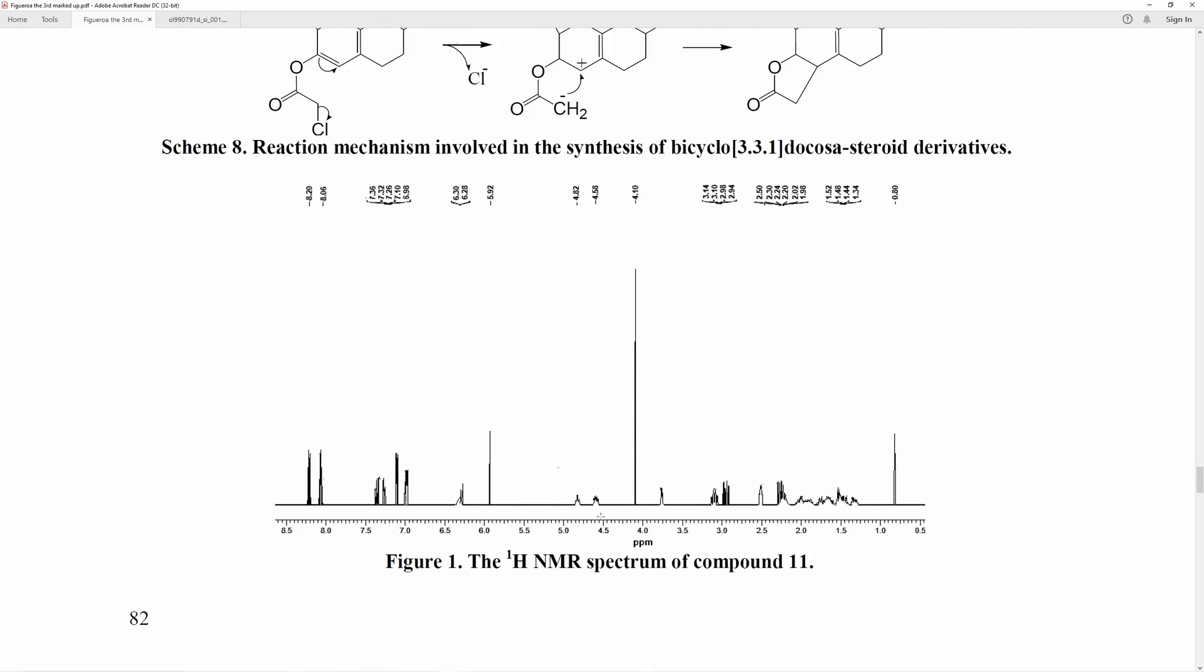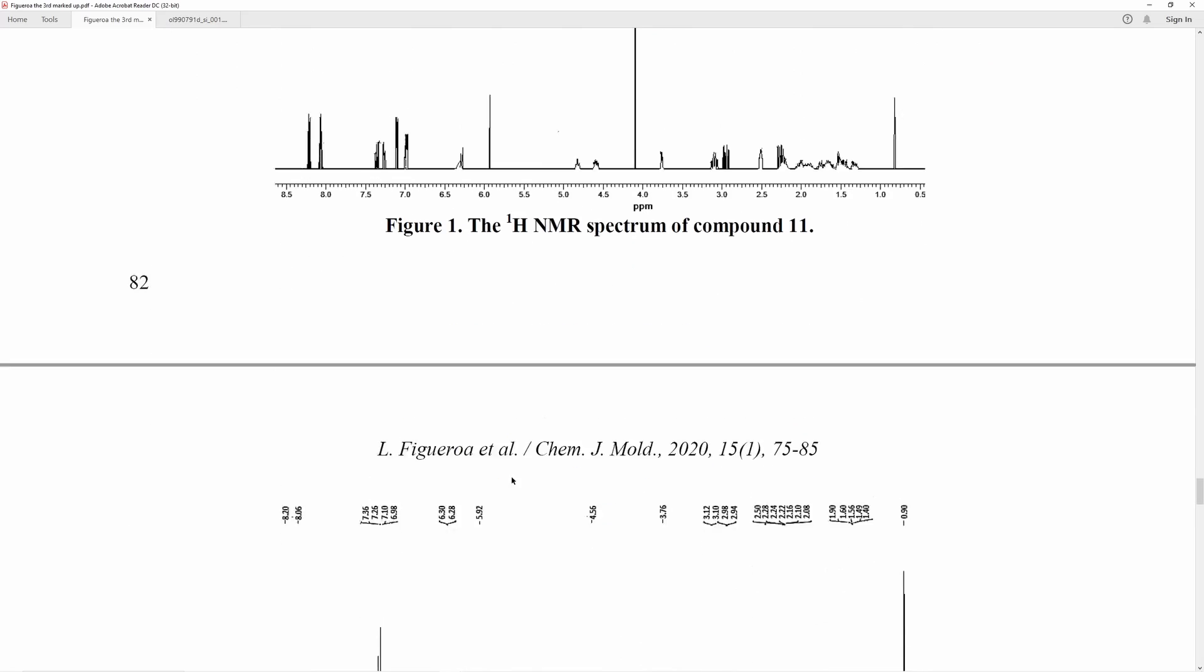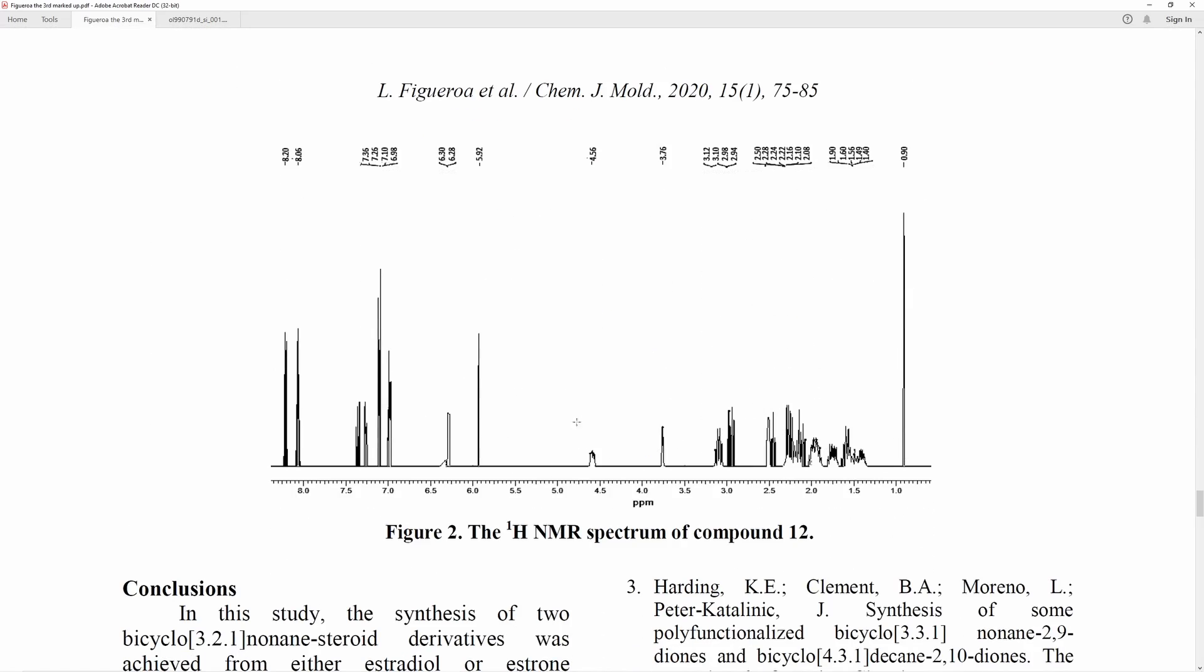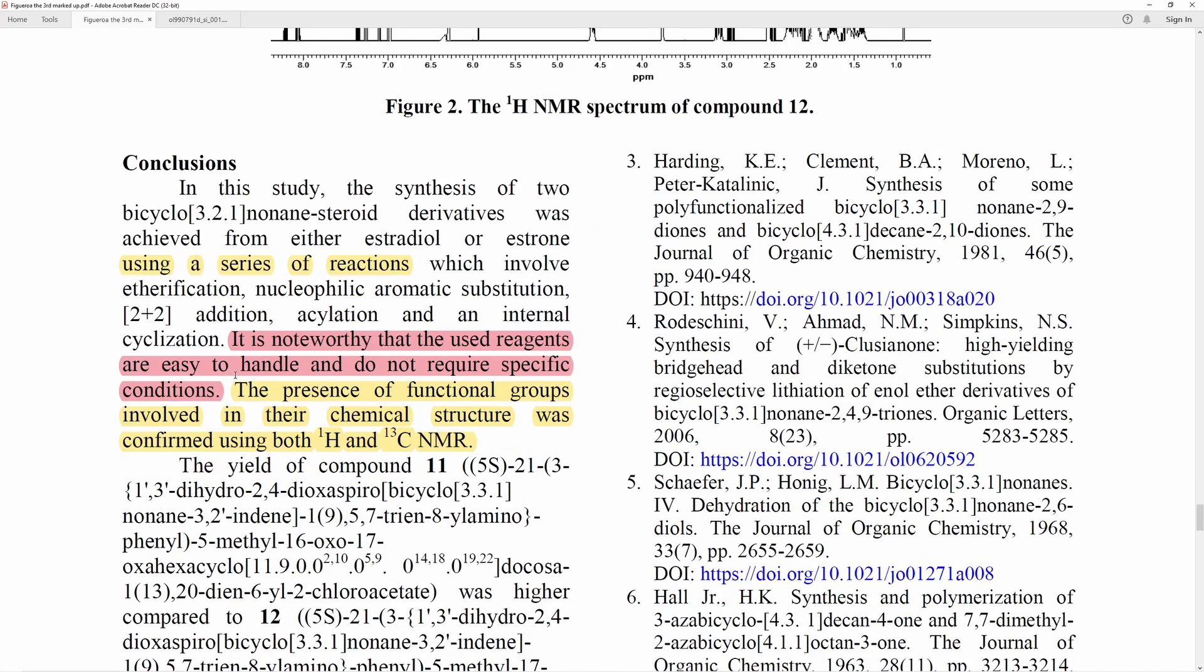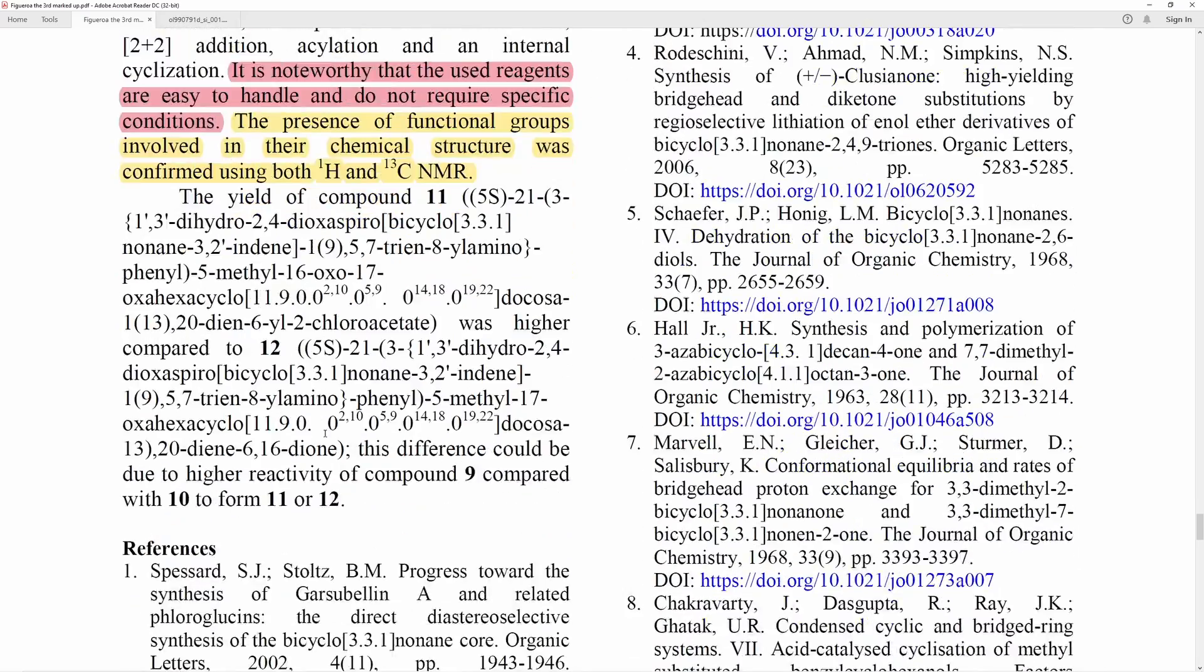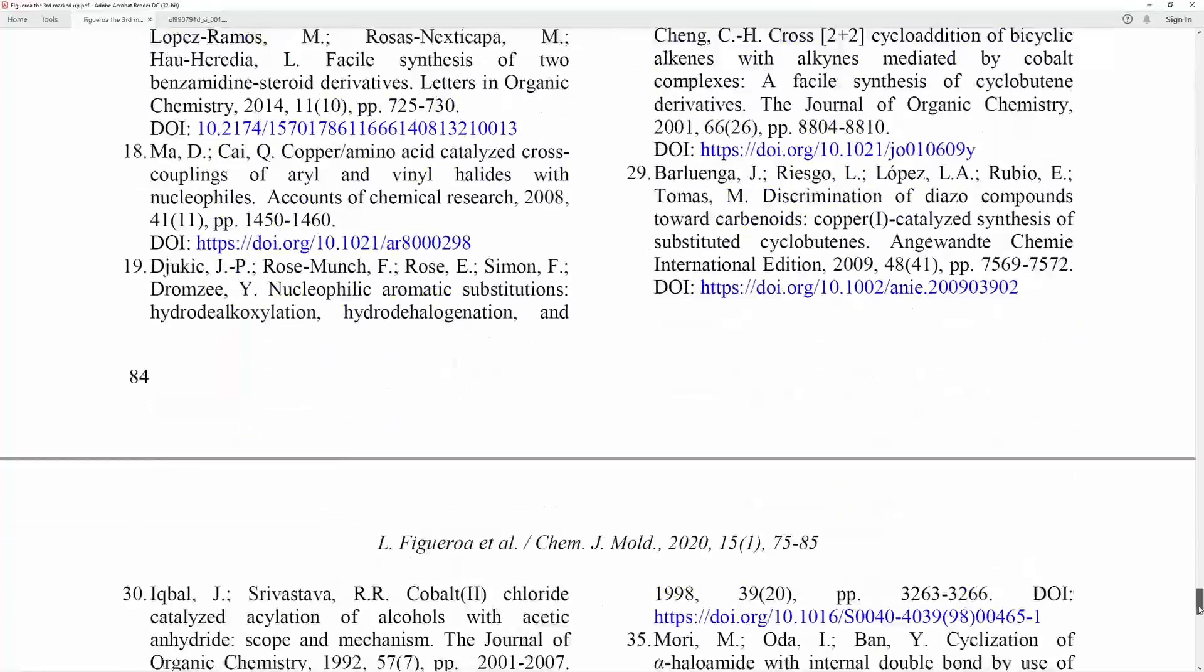Here we go. First, NMR spectrum. This looks not like any NMR I've ever seen, other than perhaps a stylistic rendition made in Microsoft Paint, potentially. Who knows? You got some other ones. All the Figaroa spectra are just very impressive. You know, it's very abstract. He used a series of reactions, and it's noteworthy that the used reagents are easy to handle and do not require specific conditions. But he reported that he used specific conditions. So, I mean, in my opinion, he did require specific conditions. And he also let us know that the presence of functional groups involved in their chemical structure was confirmed using both 1H and 13C NMR. So, this is the end of Figaroa's paper here. You can see that we got some really special chemistry going on. We have, you know, unique mechanisms that have never been proposed in history ever before coming to light for the first time.